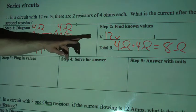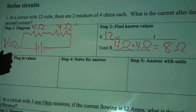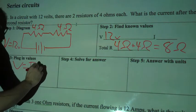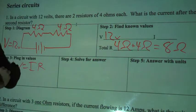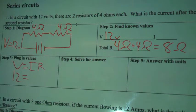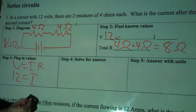We don't know the current yet. That's what we're trying to figure out. We'll plug in the values. V equals I R, Ohm's law. Voltage is going to be 12 equals I, which we don't know yet, and then my total resistance was 8 ohms.